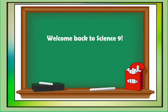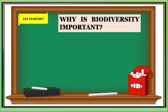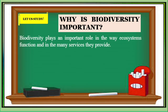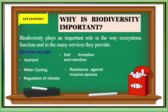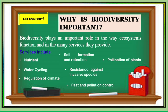Welcome back to Science 9. Let us continue with our discussion on why biodiversity is important. Biodiversity plays an important role in the way ecosystems function and in the many services they provide. These services include nutrient and water cycling, regulation of climate, soil formation and retention, resistance against invasive species, pest and pollution control, and pollination of plants. For ecosystem services, it matters which species are abundant as well as how many species are present.